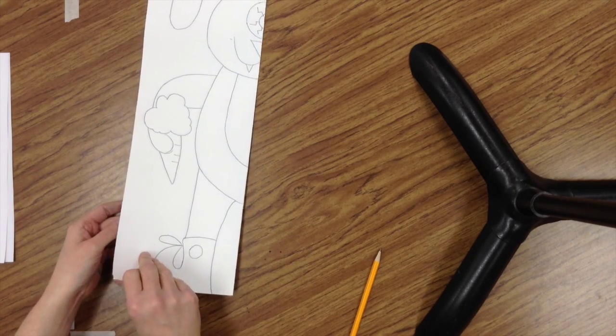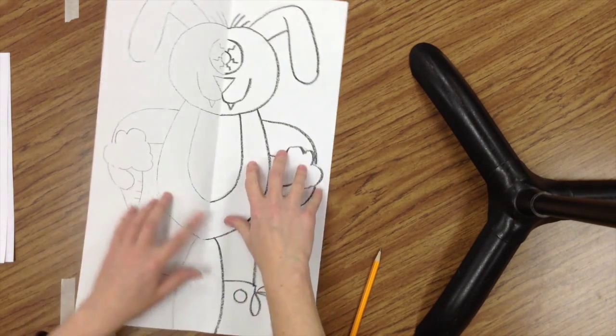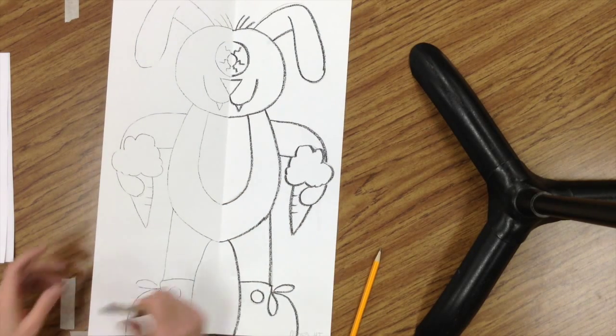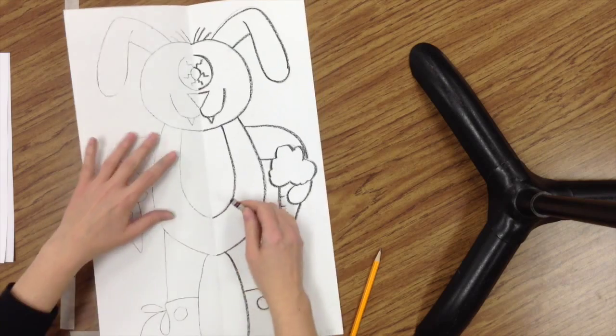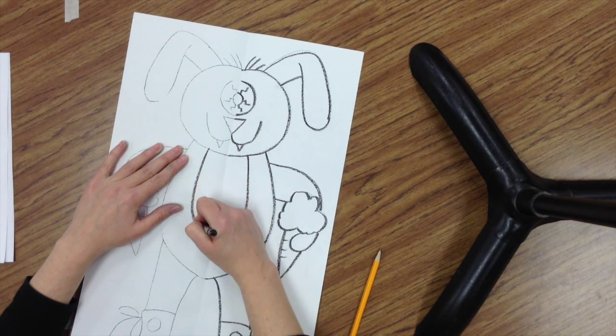I have completed the first step of the transfer method and I have a faint line of black crayon on this side. Now I'm going to go over my faint line to make it look like the other side.